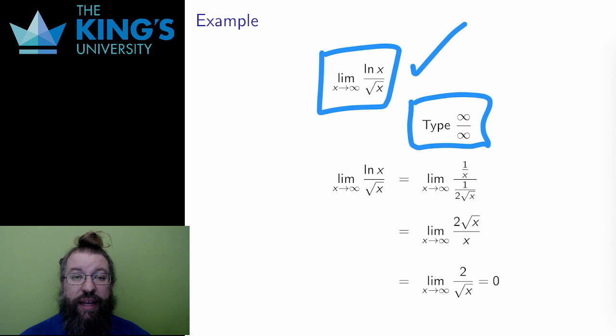That means that I can take the derivative of both numerator and denominator. So I do that. The derivative of the logarithm is 1/x. The derivative of √x is 1/(2√x). This derivative is calculated by writing the root as x^(1/2) and using the power rule, but I haven't shown the steps here.